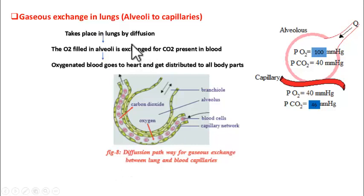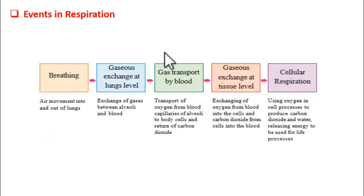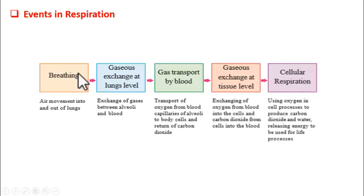Good morning students. In our previous class we understood that respiration contains 5 events: breathing, gaseous exchange at lung level, gas transport by blood, gaseous exchange at tissue level, and finally cellular respiration. We have already finished breathing, so now let's see gaseous exchange at lungs level.